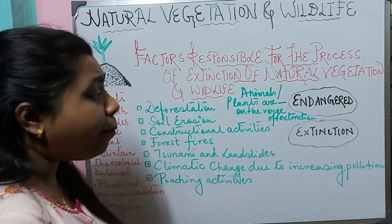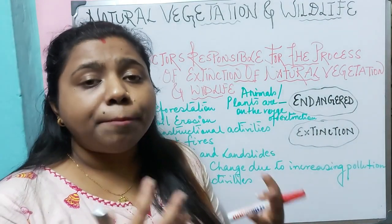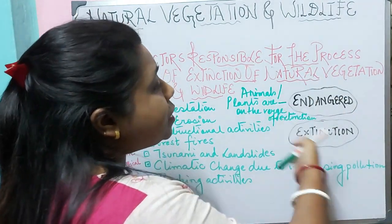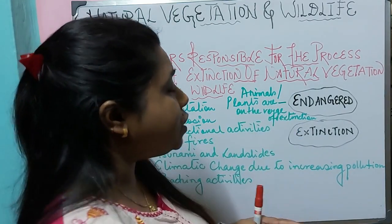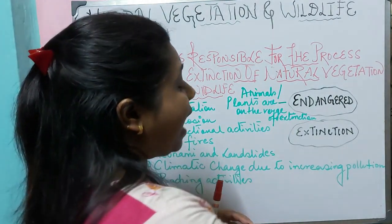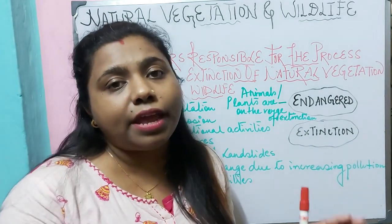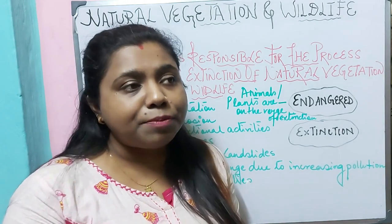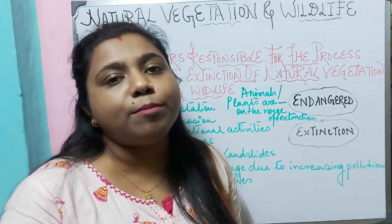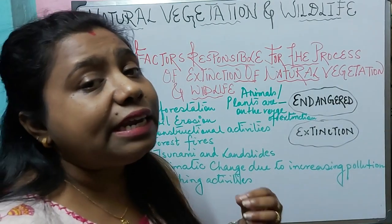The number of animals is constantly reducing because of change in climate or loss of habitat, leading the animals to be endangered. The numbers of endangered animals and plants are increasing day by day. Animals are also becoming extinct. Extinct means when they are no more present in the environment — they are no longer available on earth.